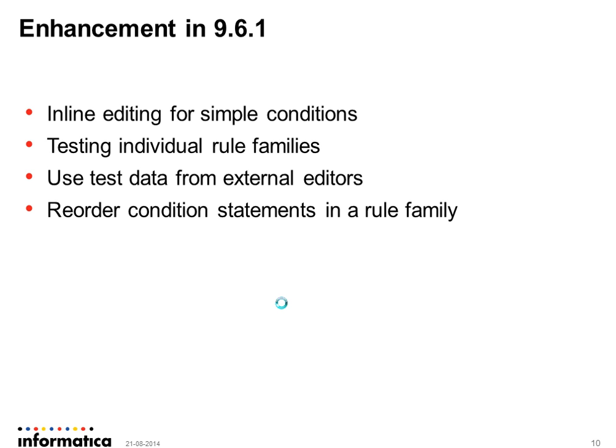The second enhancement is testing of individual rule families. In 9.6, the entire rule set was tested — you could not test part of a rule while creating a larger rule. In 9.6.1, users can test individual rule families or the entire sub-tree of a rule family, even if higher branches of the rule set are invalid or not yet configured. The third enhancement is that rule test data can be copied from external editors like Excel, and when you save a rule specification this data will be persisted, so you don't need to re-enter it repeatedly.